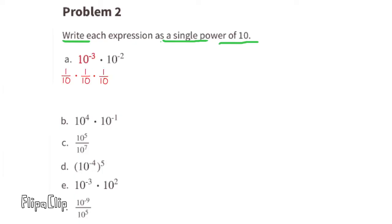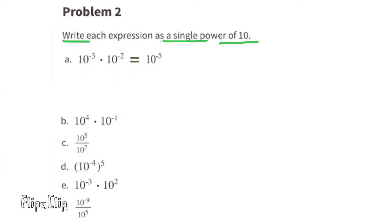We can rewrite that as 1/10 × 1/10 × 1/10 (representing 10 to the negative 3) times 1/10 × 1/10 (representing 10 to the negative 2). Altogether we have 1/10 times itself 5 different times, which is equal to 1 over 10 to the power of 5. Written as a single power of 10, this would be 10 to the power of negative 5.